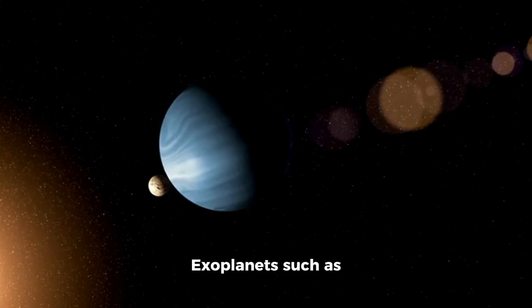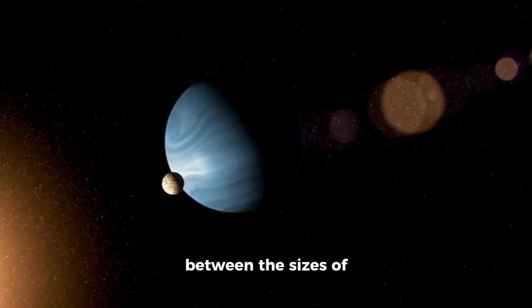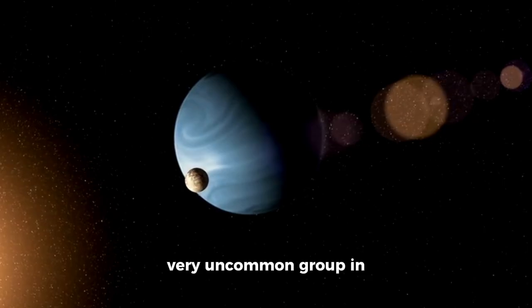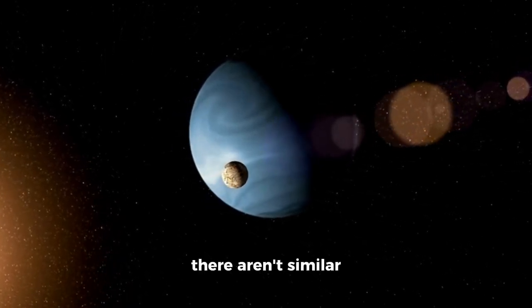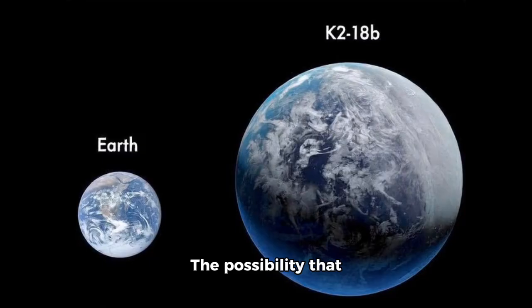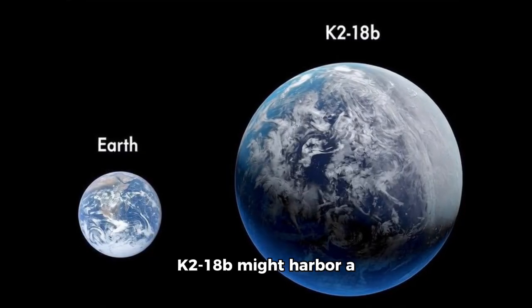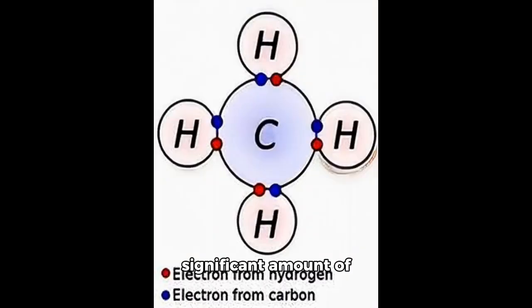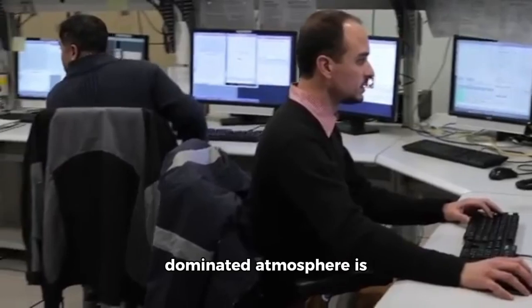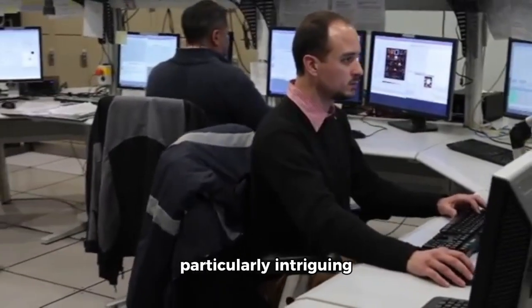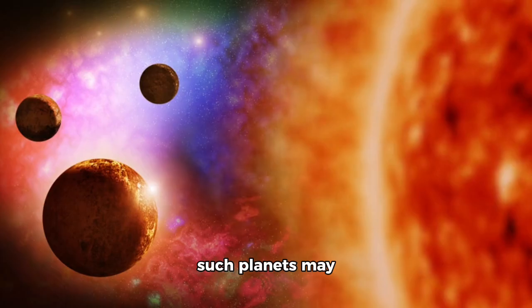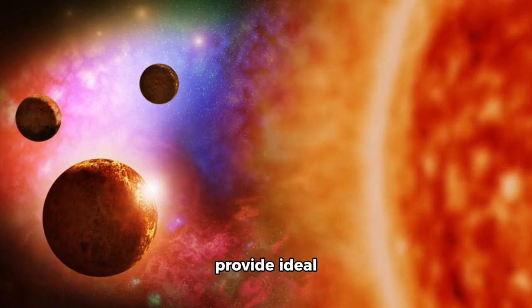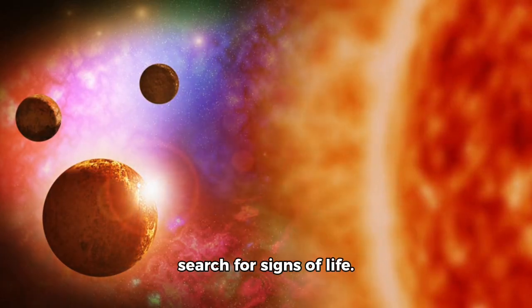Exoplanets such as K218b, which fall between the sizes of Earth and Neptune, are a very uncommon group in our solar system because there aren't similar planets in our neighborhood. The possibility that K218b might harbor a significant amount of carbon and a hydrogen-dominated atmosphere is particularly intriguing to astronomers. Many experts believe such planets may provide ideal circumstances for the search for signs of life.